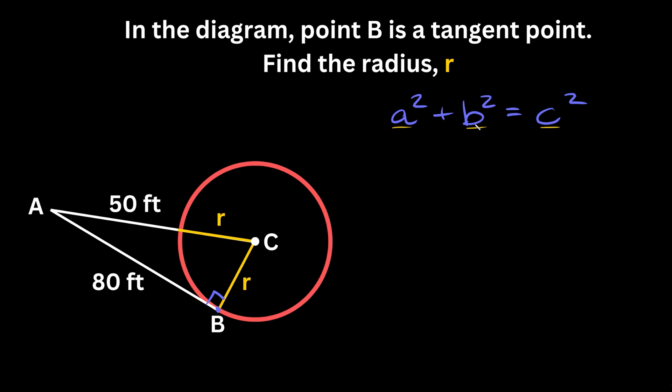Let's identify the two shorter sides and the hypotenuse, because this is a part we have to be careful with. The two shorter sides would be 80 feet and R, and the hypotenuse, the longest side, would be 50 plus R.